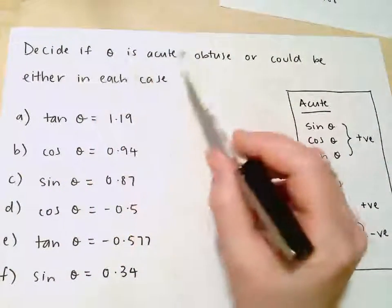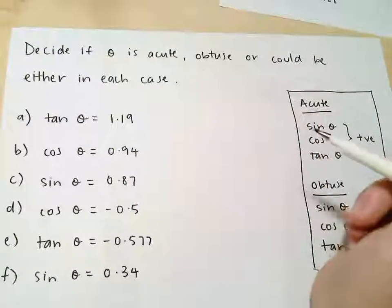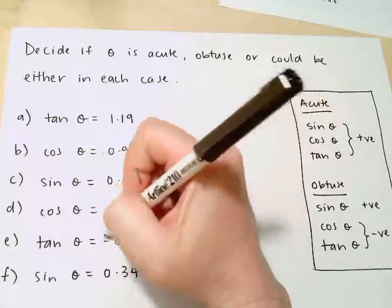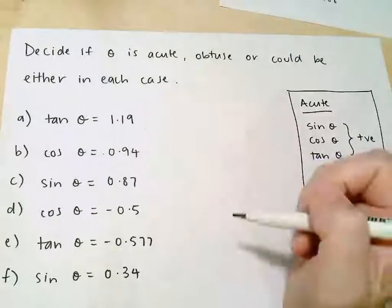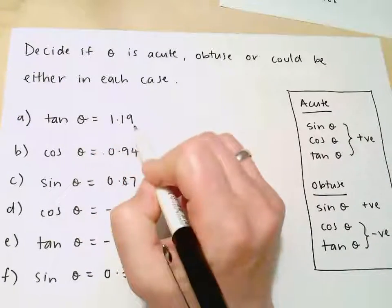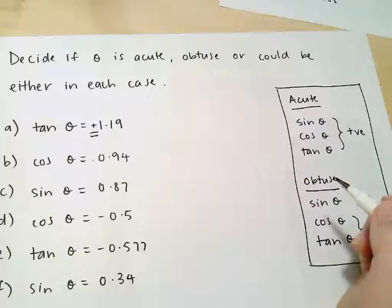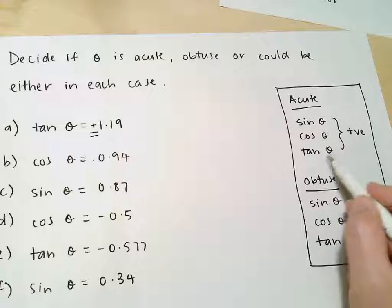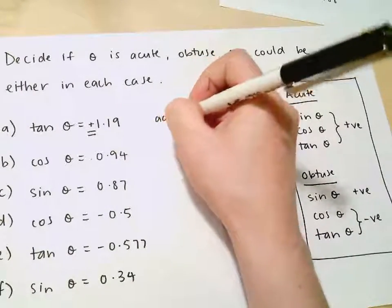This question says: decide if theta is acute, obtuse, or could be either in each case. I'm going to look at the sign in front of each number, see whether it's positive or negative, and use the rule to decide. Tan theta is 1.19 — that's a positive value. I only get positive values for tan when theta is acute; if theta were obtuse, I'd get a negative. So theta here is acute.